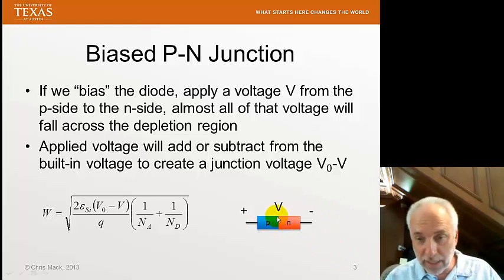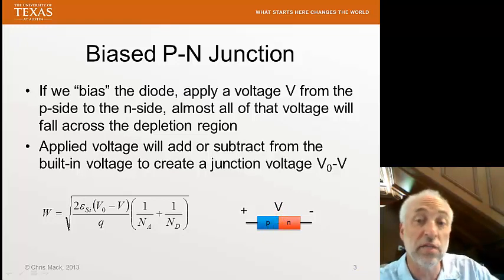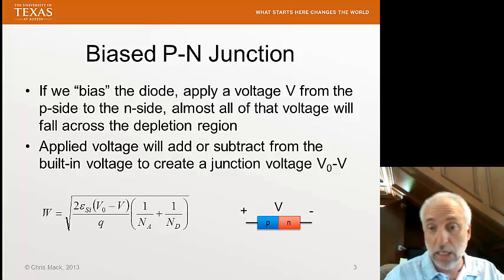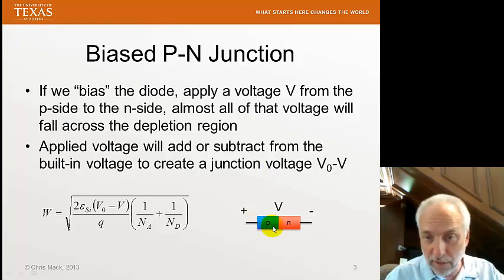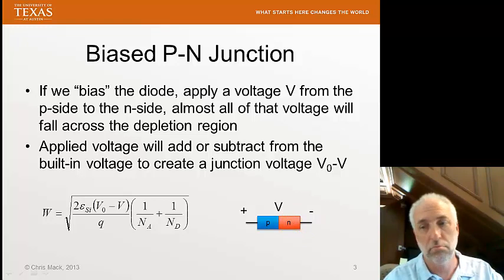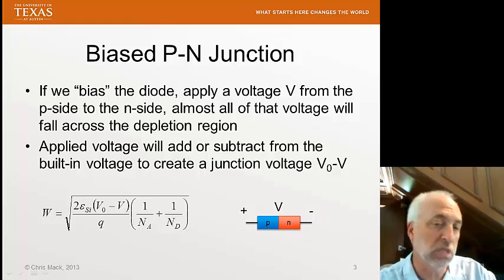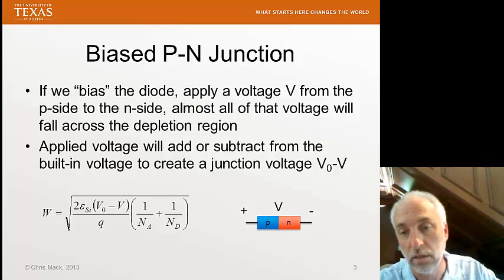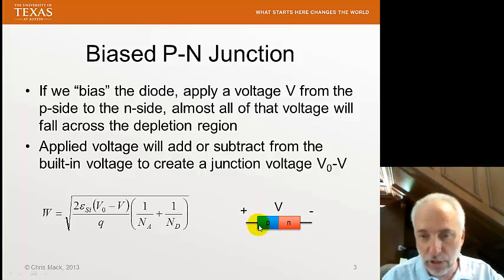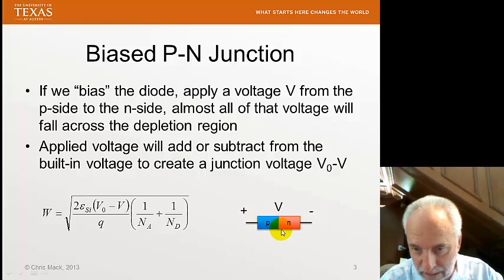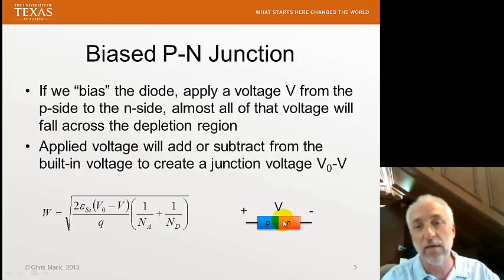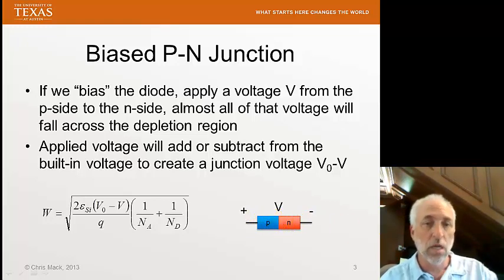Now, if I think about this PN junction, remember right in the middle is a depletion region. The depletion region has no mobile charge carriers. That is, it's acting like a very good insulator. Now, the bulk of the P material and the bulk of the N material, it's got lots of mobile charge carriers. Conducts current very well. It acts like a conductor. So when I apply a voltage, this looks like a wire, and then I have a high resistance region, and then another wire. All of the voltage that I apply across my diode, across my PN junction, will be across the depletion region.